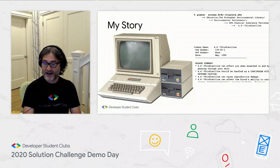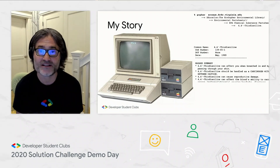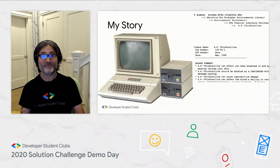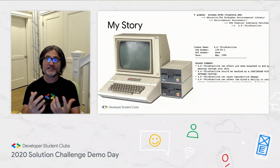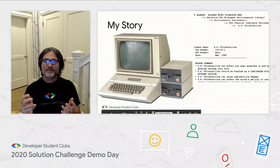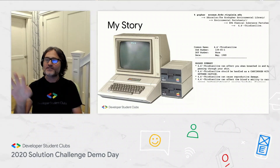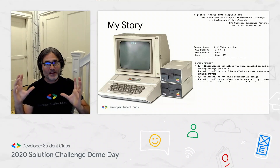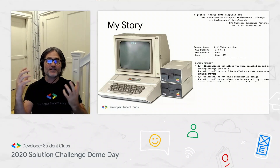My friend and I one day saw there was a new program released called Gopher. This predated the web, but it was the first system that had the concept of a menu of items that you could see, where each one of those could be anywhere in the world. You didn't have to know server names or anything like that — if somebody could spend the time to curate and pull together information, you could make it easy to discover.